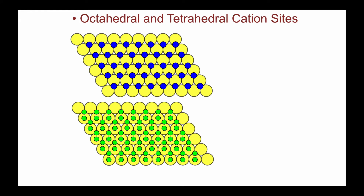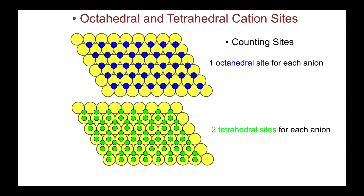Here's a summary of the positions of the octahedral and tetrahedral sites within the close-packed arrangement. At the top, the octahedral holes in blue, and at the bottom, the tetrahedral holes. As we count sites, one thing to remember is that per anion, there is one octahedral site or hole. Also, each anion generates two tetrahedral holes where a cation could potentially be located.